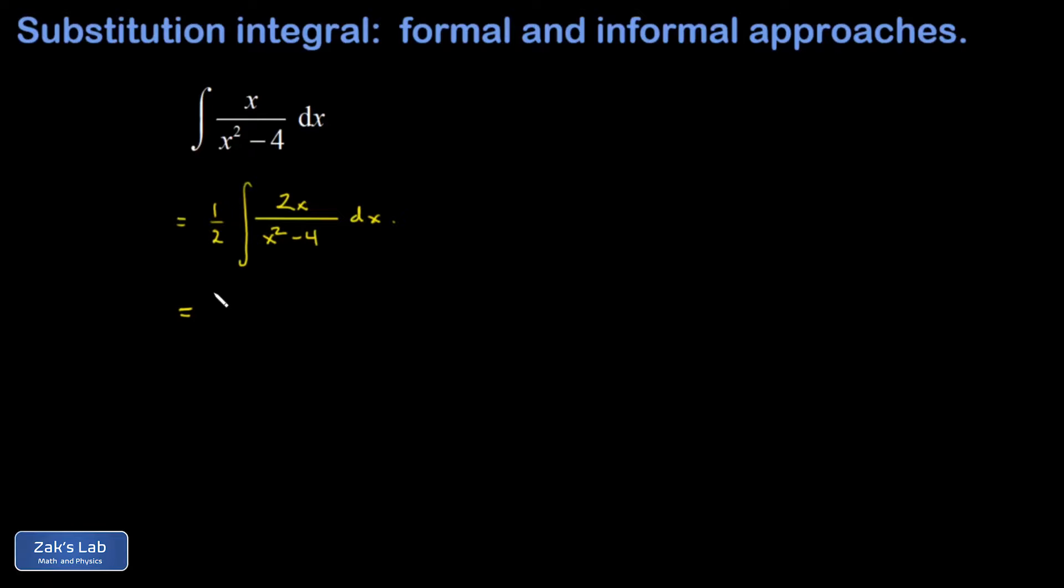Natural log gives 1 over its argument when you differentiate it, and then the chain rule multiplies by the derivative of that argument. So this gives me one-half natural log absolute value of x squared minus 4 plus c.